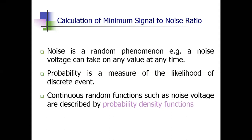Since we are dealing with probability of false alarm and probability of detection, we have to first start with what is noise. In communications, noise is assumed to be an integral part of the signal, making it a challenge to detect the target. Noise is taken as a random phenomenon - it can take any value at any time. The noise voltage Vt is described using probability density functions.